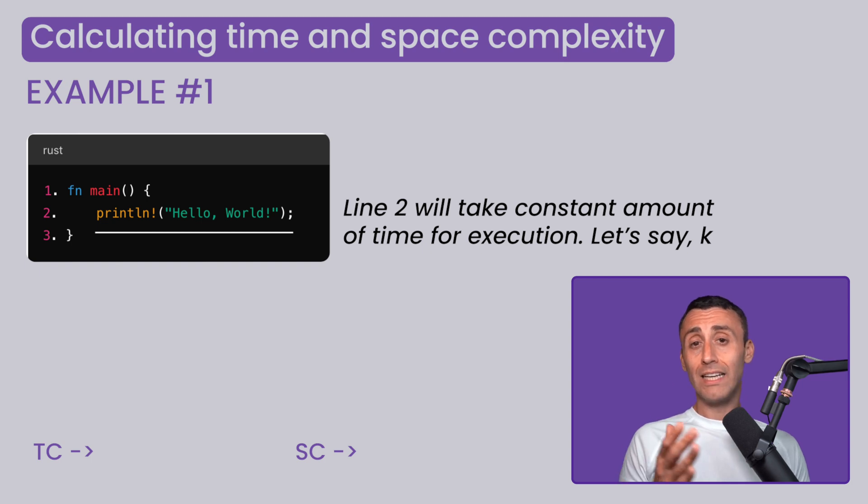So, the time complexity T of n here is equal to K. So T of n equals K, which, as we just learned in big O notation, can be written as T of n equals K multiplied 1, where g of n equals 1. Hence the time complexity will be T of n equals O of 1.